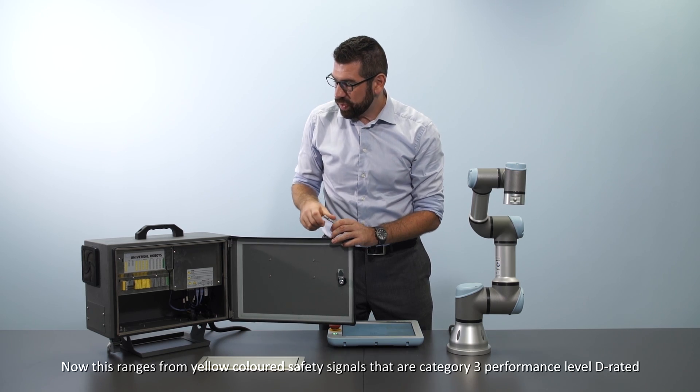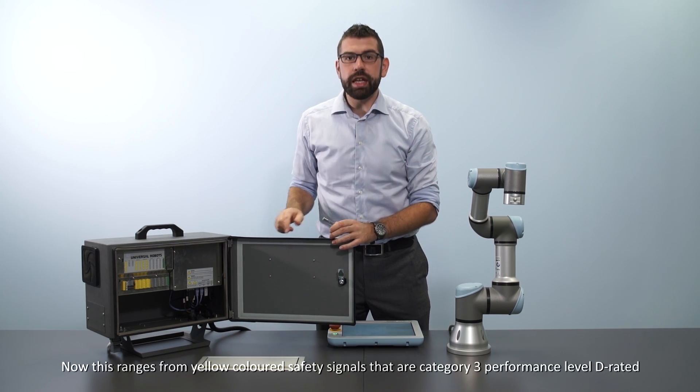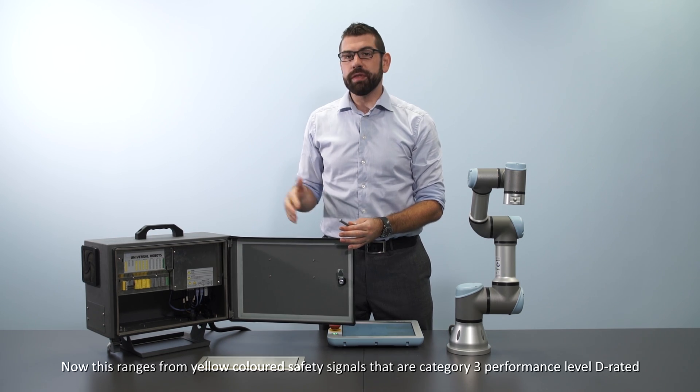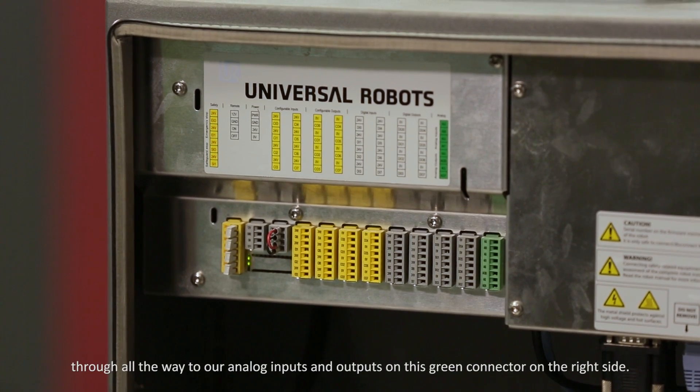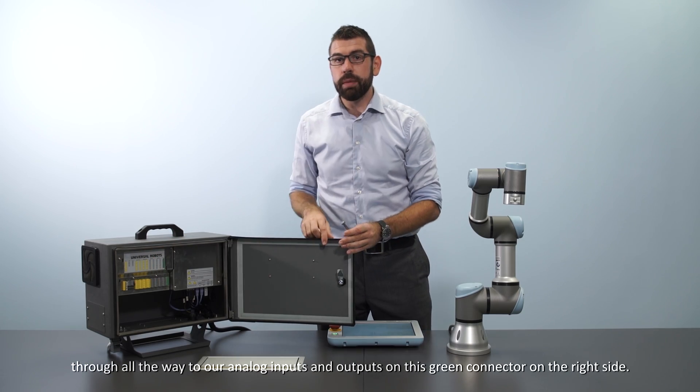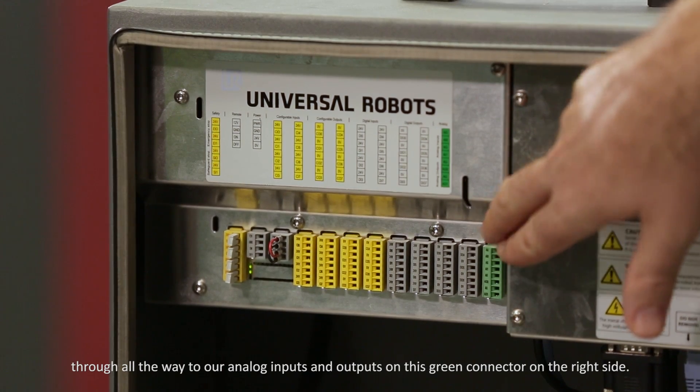This ranges from yellow colored safety signals that are category 3 performance level D rated all the way to our analog inputs and outputs on this green connector on the right side.